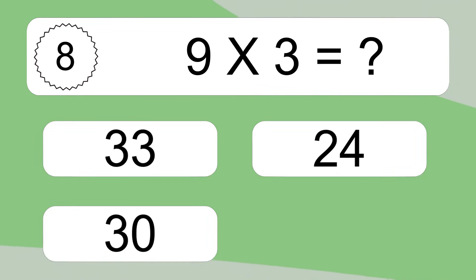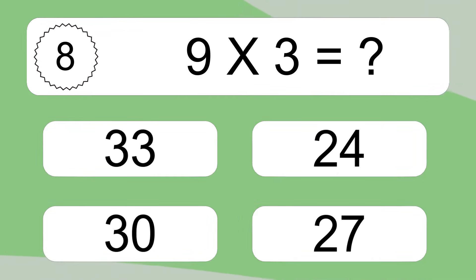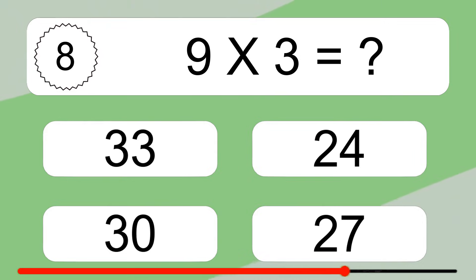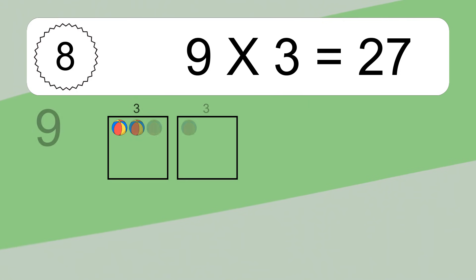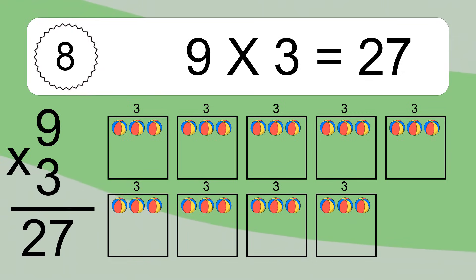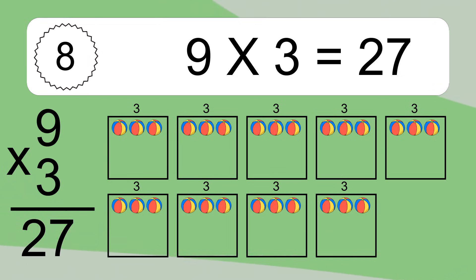9 times 3 equals what? 9 times 3 equals 27. We have 9 boxes, and each box has 3 colorful balls inside. If you count all the balls in all the boxes together, you will have 9 times 3 balls. This equals 27 balls.